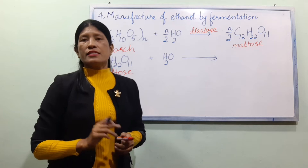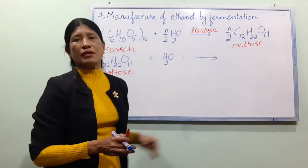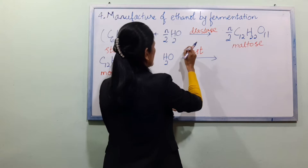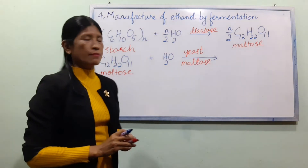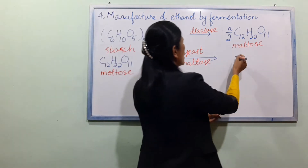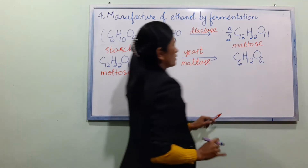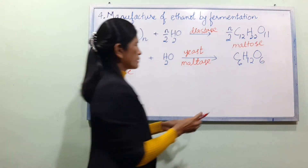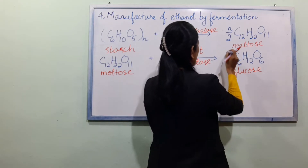Yeast contains the enzyme maltase, M-A-L-T-A-S-E. Maltase converts maltose into glucose. The product is C6H12O6, glucose, giving two molecules of glucose: 2 C6H12O6.